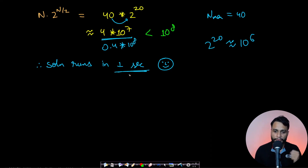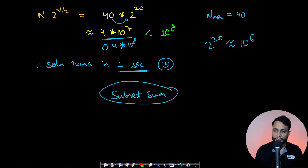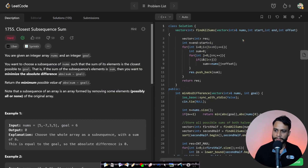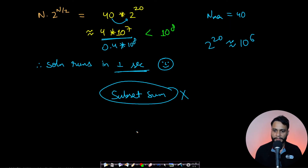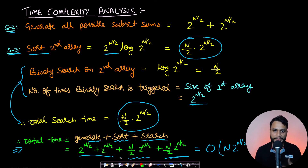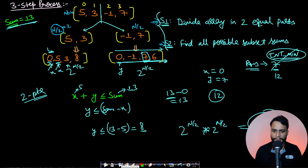This is the Meet in the Middle algorithm, which is what you are expected to use to solve this problem. Dynamic programming subset sum is not a feasible solution here, so it should be avoided. The code for LeetCode 1755 will be in the description below. If you have any doubts please ask in the comment section. If this video was helpful please hit a like and subscribe to our channel. See you guys in the next video, thank you.